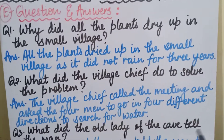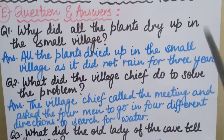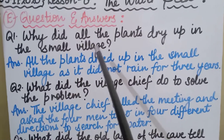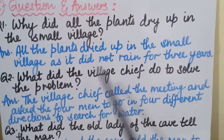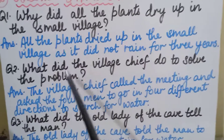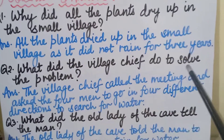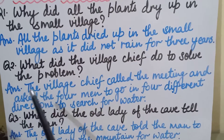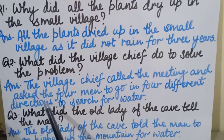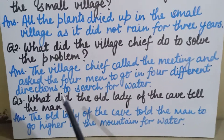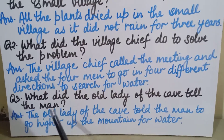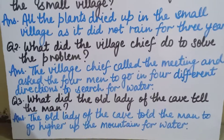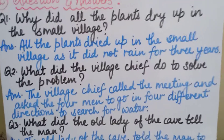Let me repeat these three question answers. First question: Why did all the plants dry up in the small village? Answer: all the plants dried up as it did not rain for three years. Second question: What did the village chief do to solve the problem? Answer: the village chief called the meeting and asked the four men to go in four different directions to search for water. Third question: What did the old lady of the cave tell the man? Answer: the old lady told the man to go higher up the mountain for water.